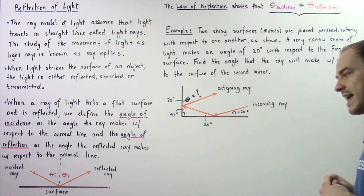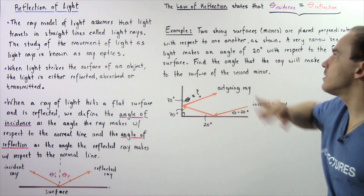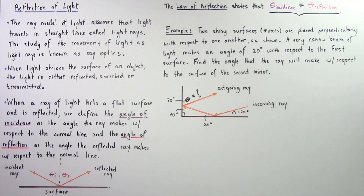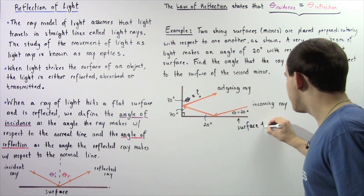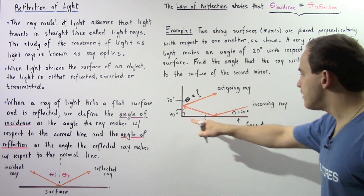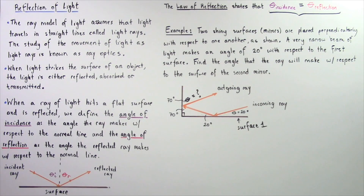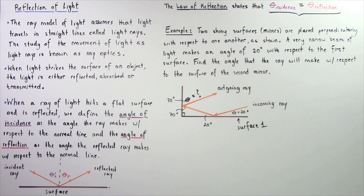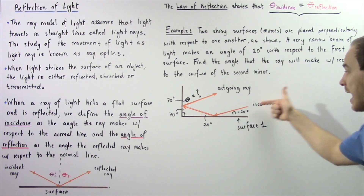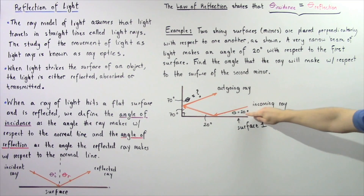Let's look at an example that applies the law of reflection. Suppose two shiny surfaces — let's say mirrors — are placed perpendicularly with respect to one another. Surface number one is this brown line, and surface number two is perpendicular to it, as shown by the perpendicular symbol. A narrow beam of light hits surface number one with an angle of 20 degrees. We want to find the angle that the light ray makes with respect to the surface of the second mirror.